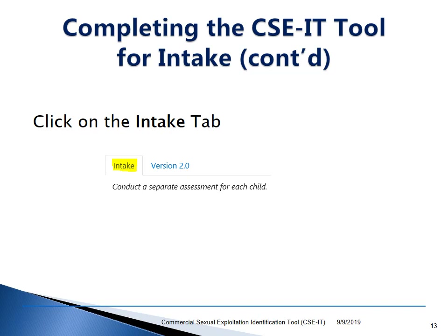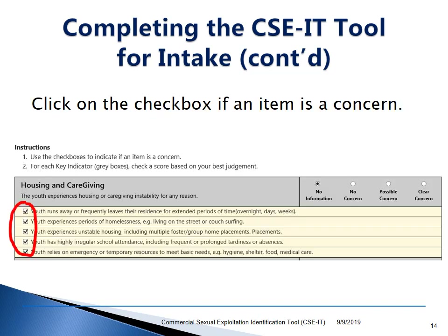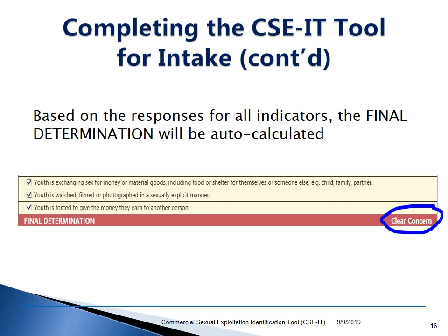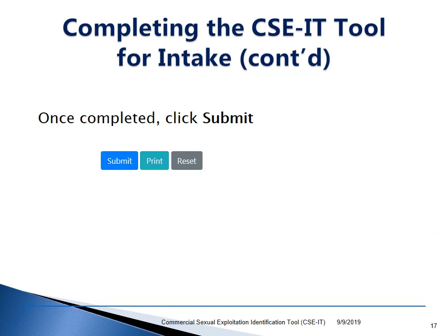Once the fields are completely filled out, the SEE-IT tool will appear on the bottom. Click on the Intake tab. Complete the tool in its entirety by checking off a box only if the item is a concern. For each indicator or gray area, select the corresponding response: no information, no concern, possible concern, or clear concern. Based on the responses for all indicators or gray areas, the final determination will be auto-calculated. Upon completion of the SEE-IT tool, please click Submit.